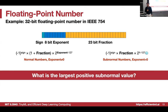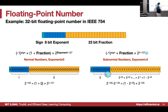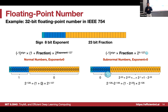The largest positive subnormal value has all exponent bits 0 and all fraction bits 1. The fraction sum is 2^(−1) + 2^(−2) + ... + 2^(−23) = 1 − 2^(−23). Combined with the exponent term 2^(1 − 127) = 2^(−126), the largest positive subnormal is (1 − 2^(−23)) × 2^(−126).